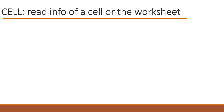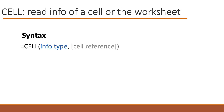Let's look at the function syntax first. It's pretty simple and straightforward. We say equals CELL, and there are two arguments. The first argument is required: what is the info type? And then the second argument, the cell reference, that's optional. We'll talk about what that is.